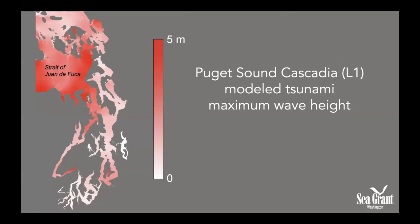You might wonder what a Cascadia tsunami will do as it moves inland into the Puget Sound area — Karina Allen will be talking about that more just after me. But here is a snapshot of maximum wave heights from a modeled Cascadia earthquake tsunami offshore. The city of Seattle is right here, and Tacoma and Olympia. The tsunami is not going to be the same height everywhere, but in some places it will be a significant event. Aside from wave heights, we also have to be concerned with dangerous currents, which will also be discussed more later.